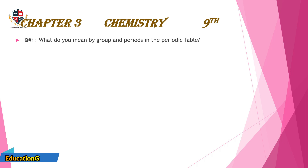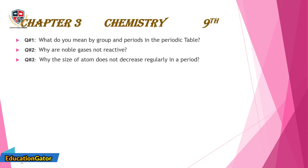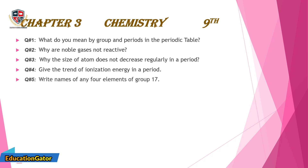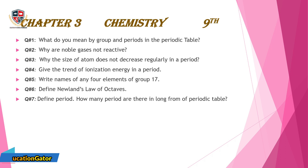Chapter 3, Chemistry 9th. Question 1: What do you mean by group and periods in the periodic table? Question 2: Why are noble gases not reactive? Question 3: Why does the size of an atom not decrease regularly in a period? Question 4: Give the trend of ionization energy in a period. Question 5: Write names of any four elements of group 17. Question 6: Define Newland's law of octaves.